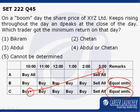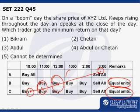What happens when B buys equal units? The price is going up, which means that the subsequent investments of B throughout the day keep on increasing. So if B made some investment at 10 a.m., then that investment grew at 11, grew further at 12, would grow further at 1 and would grow further at 2 p.m.